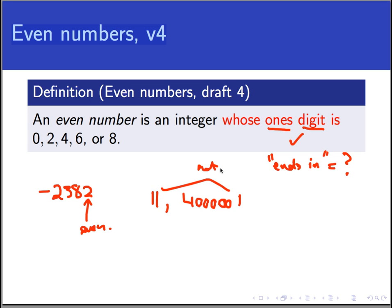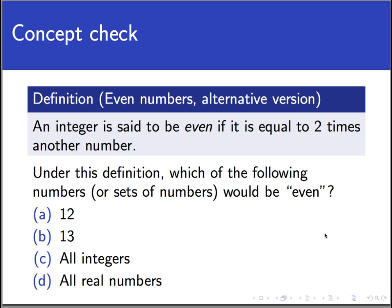So for a concept check, we're going to look at another definition of even. Once we have gotten it fully up to specs, it'll become our official definition of even number. Here's a draft version. An integer is said to be even if it is equal to 2 times another number. Now, the question this time is, under this definition, which of the following numbers is or are even? Remember that this definition could have flaws in it, and you must take it literally. That's something we always do with mathematical definitions. We're very, very strict about our definitions. So the definition might identify some numbers as even when in reality we know they aren't.